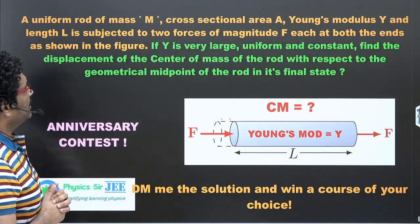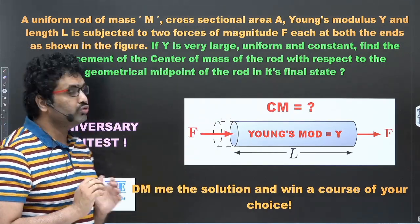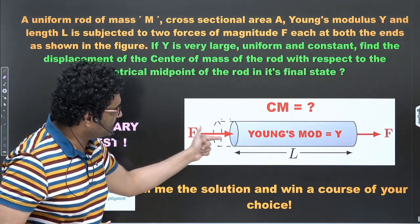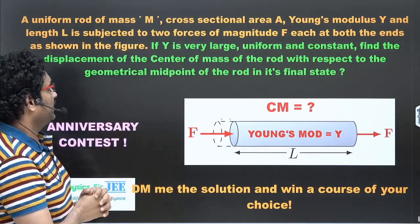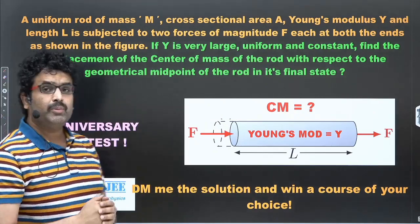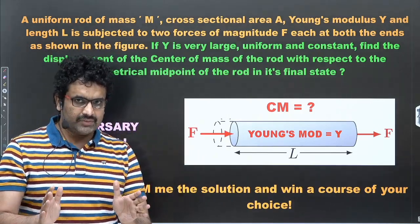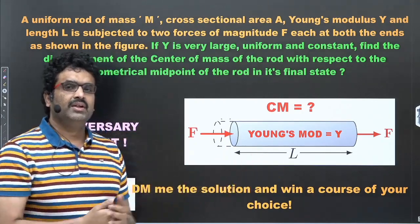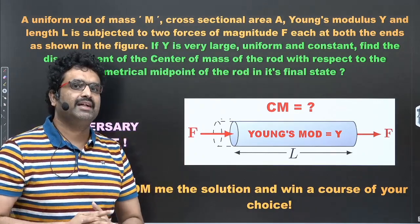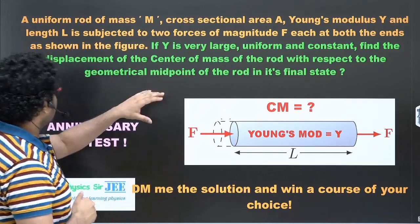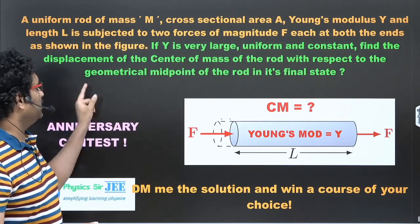A uniform rod of mass M and cross-sectional area A, Young's modulus Y and length L, is subjected to two forces of magnitude F — one being the compressive one, another being the elongative one — uniformly distributed around the cross-section of that particular rod at each end, as shown. The Young's modulus Y is considered to be, as is the case with our JEE problems, a very large value, uniform throughout the rod.